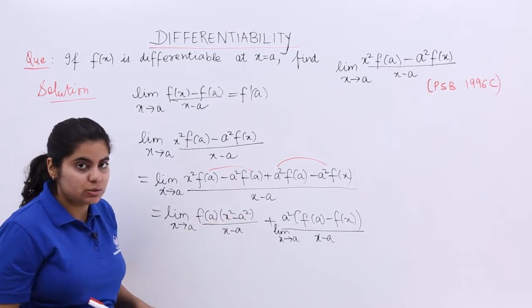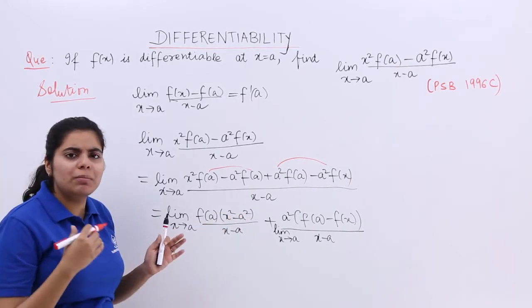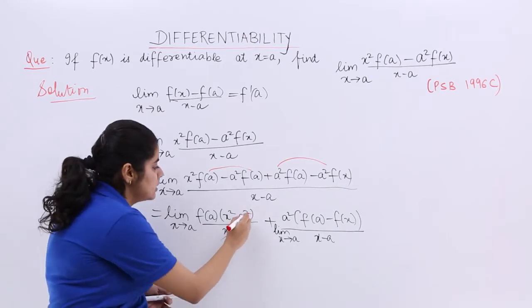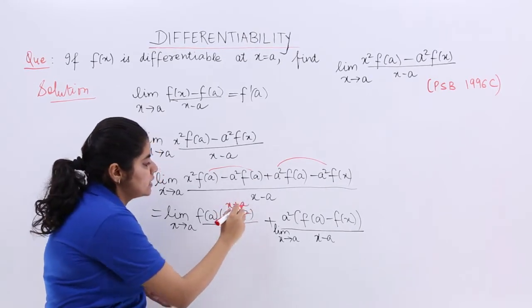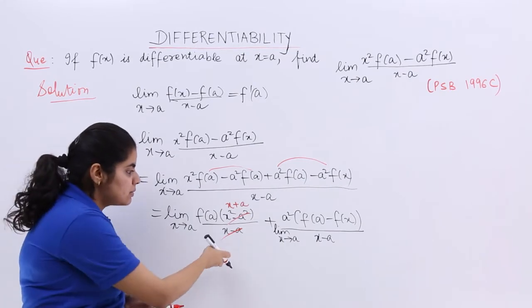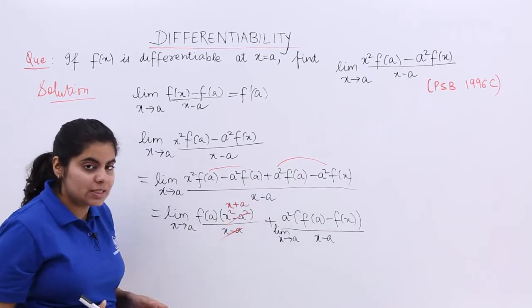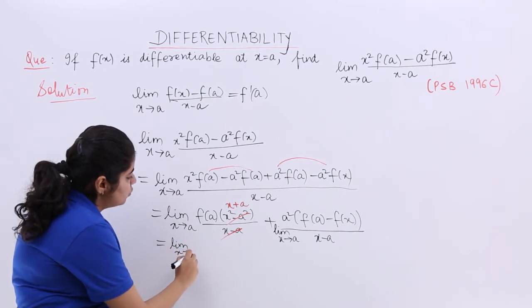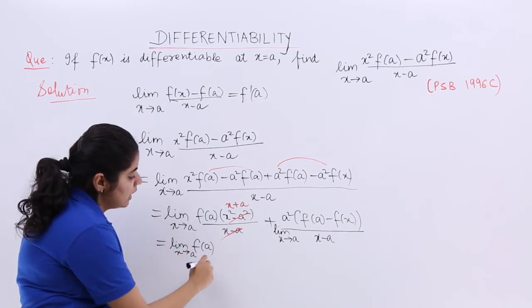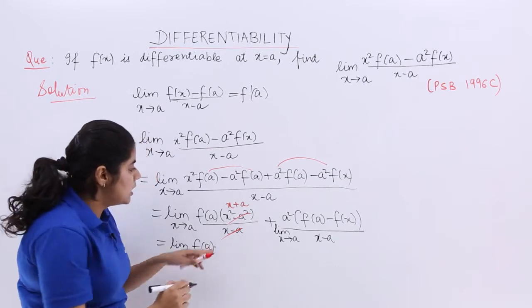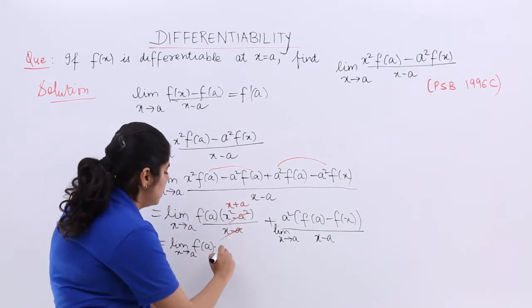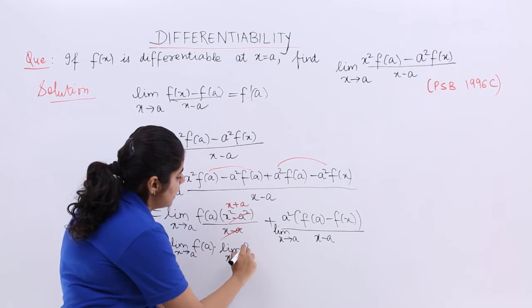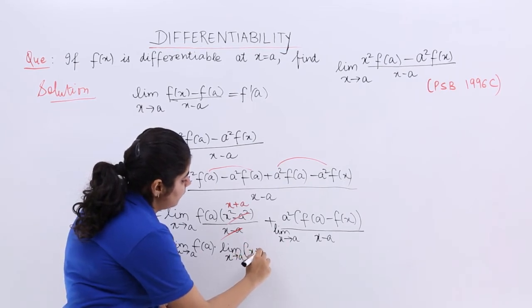Now x² - a² is basically the formula a² - b² which is (a + b)(a - b). So certain things get cancelled and we are left with x + a, because x - a will be cancelled with x - a. So it is limit x tends to a of f(a)(x + a). Let us write down limit separately. Limit x tends to a of (x + a).